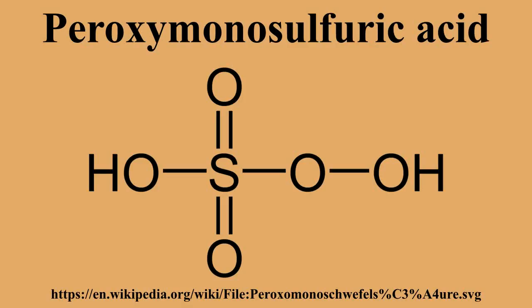Large-scale production of Caro's acid is usually done on-site due to its instability. According to a patent by Martin, Caro's acid is produced by reacting greater than 85% sulfuric acid and less than 50% hydrogen peroxide: H2O2 + H2SO4 → H2SO5.